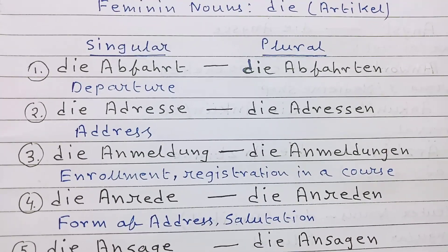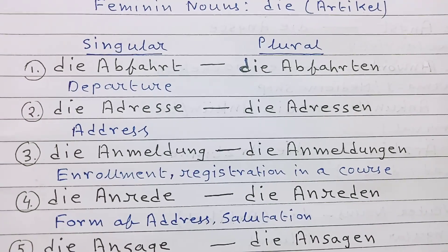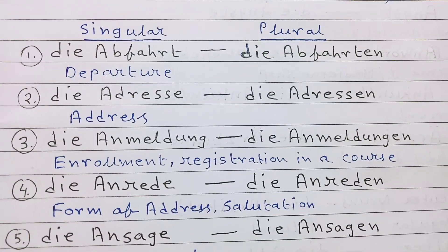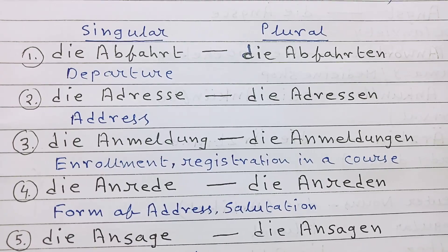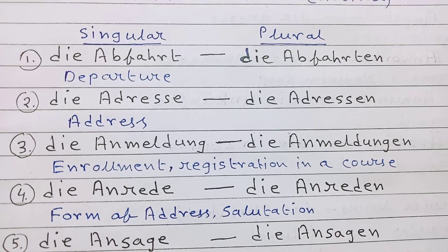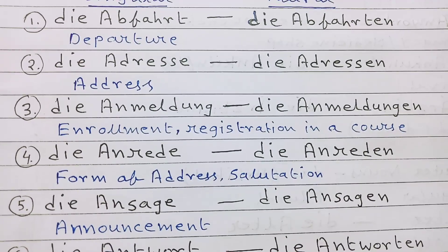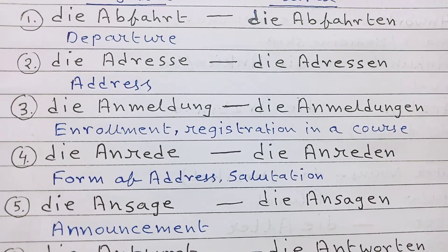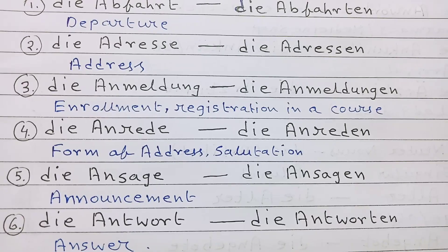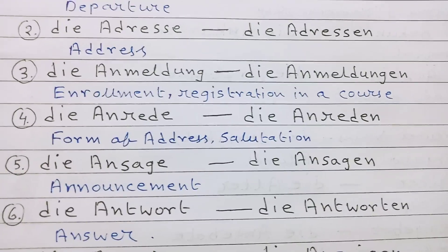Number 1: die Abfahrt, die Abfahrten — departure. Number 2: die Adresse, die Adressen — address. Number 3: die Anmeldung, die Anmeldungen — enrollment or registration in a course.